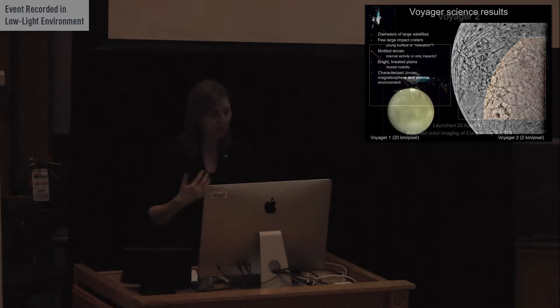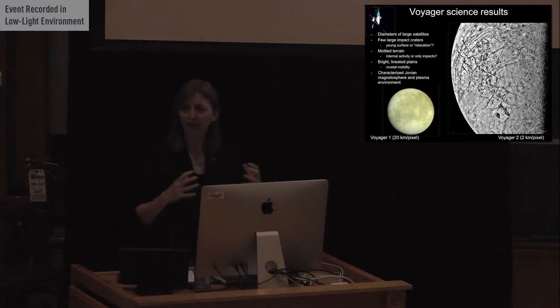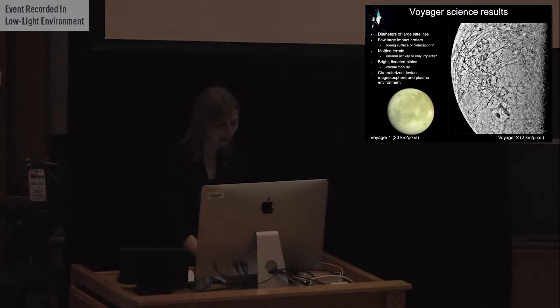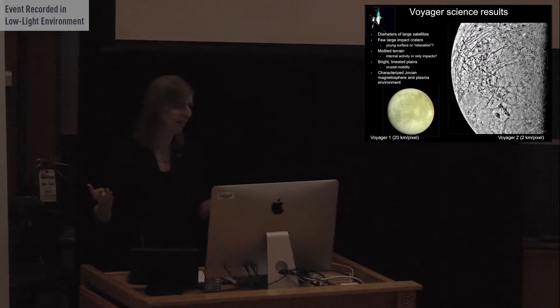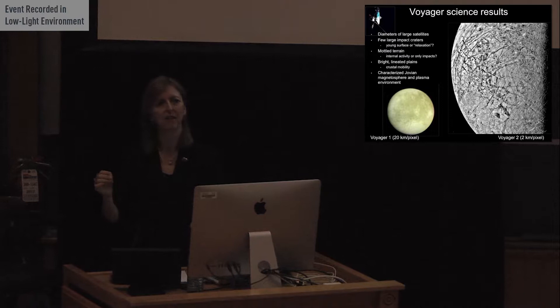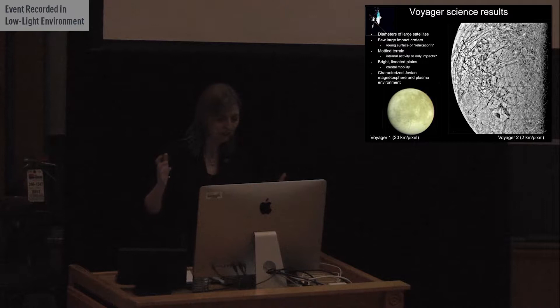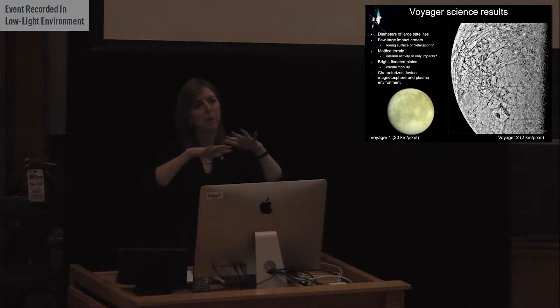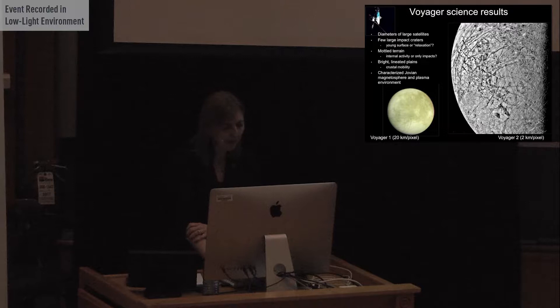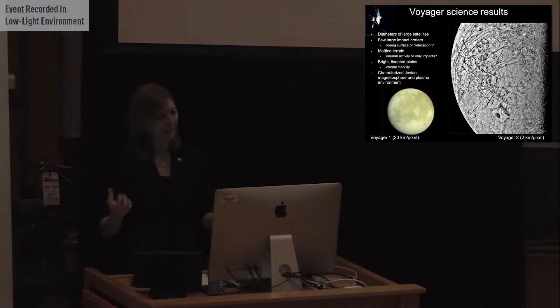So the Voyager spacecraft together had really sent us a huge amount of information about all of the outer solar system, but especially the Jovian system. So they measured the diameters of the four largest satellites called the Galilean satellites after Galileo because he discovered them. For Europa particularly, they noticed there were very few impact craters on the surface. That means that it's a very young surface age. I mentioned this mottled terrain. They didn't really know what it was. These lineated planes, they found that a lot of these lines were material where the crust had actually split apart and new material had come up into the gap, which is really bizarre and interesting result. And that the crust was very mobile. They could actually see that it had moved around in plates. And the Voyagers also characterized the Jovian magnetosphere and the plasma environment. So they characterized it such that we knew how to send more spacecraft there that could last a longer time.